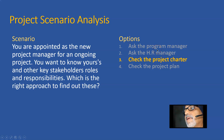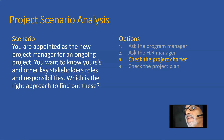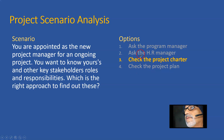Maybe asking the program manager is also a right option. Ask the HR manager is also a right option. Check the project plan is a wrong option because the project plan doesn't have the business case and roles and responsibilities of the key stakeholders. All the key stakeholders will not be there in the project plan — maybe the team's details could be there. So project plan we can rule out. Ask the program manager may be right. Ask the HR manager is right. Check the project charter is also right.